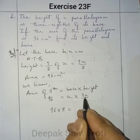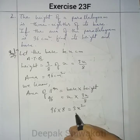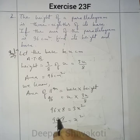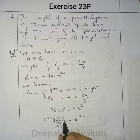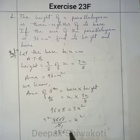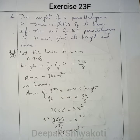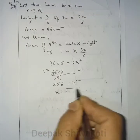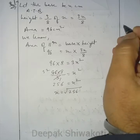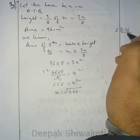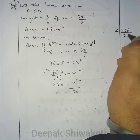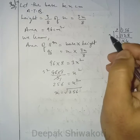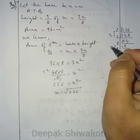Area of parallelogram is given as 96 centimeters square. So 96 into 8 equals 3X squared. That gives us 96 into 8 by 3 equals X squared. Simplifying, 256 equals X squared. So X will be the square root of 256. Factorizing 256, the square root of 256 is 16. So the base X equals 16 centimeter.